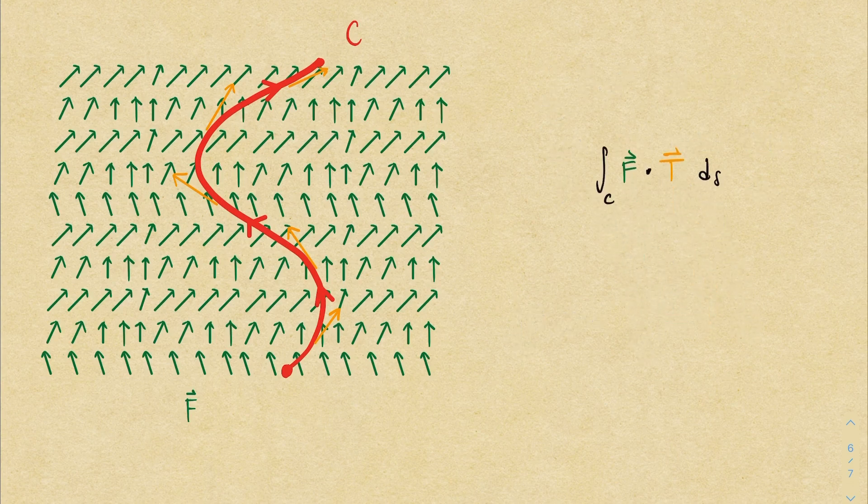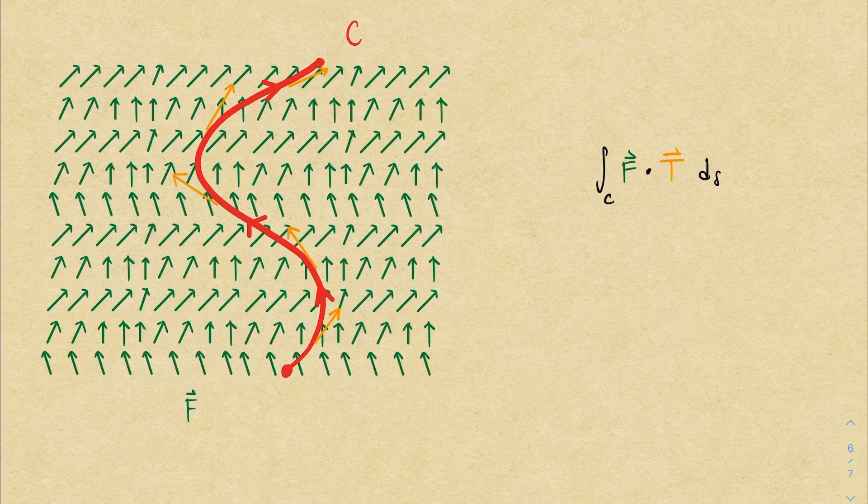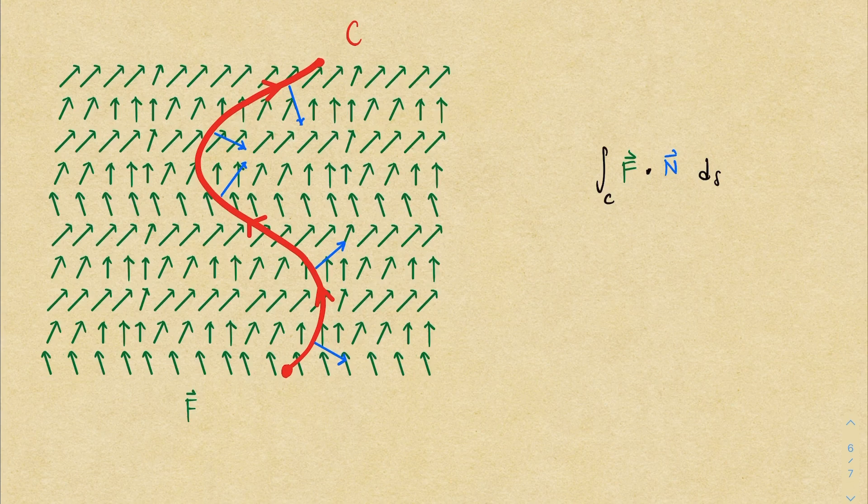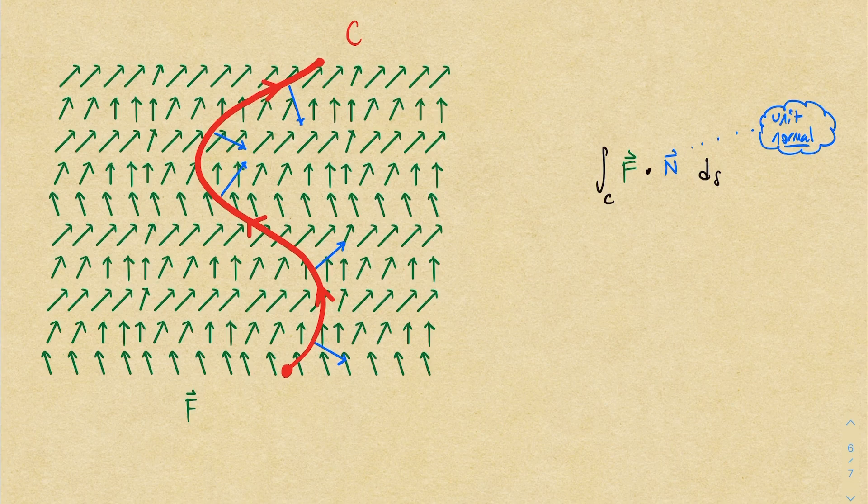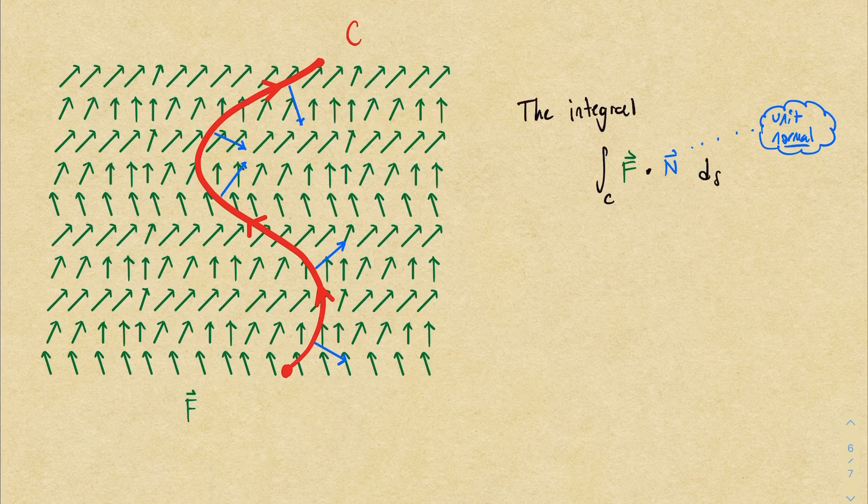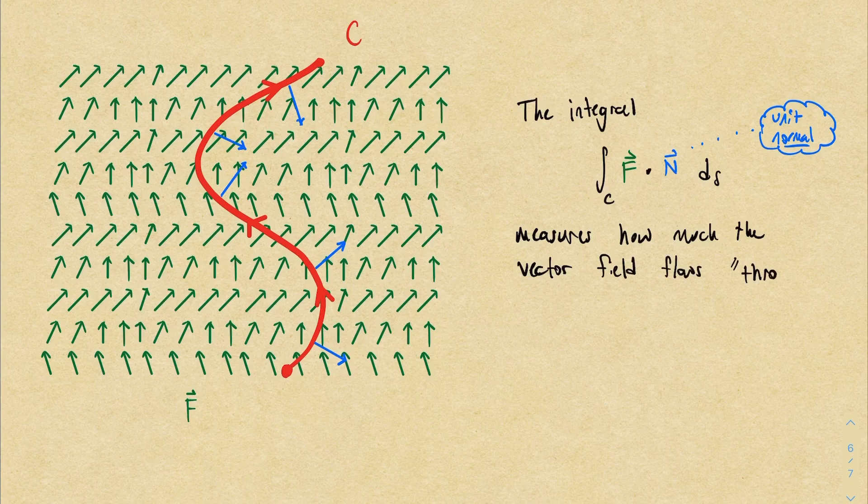Well, instead of dotting the vector field with a unit tangent vector at every point, we could take each of those tangent vectors and rotate them by 90 degrees to the right to get a unit normal vector. These blue vectors are all perpendicular to the red curve. So if we integrate the dot product of the vector field with the normal vector, we're measuring how much the vector field flows through the curve.